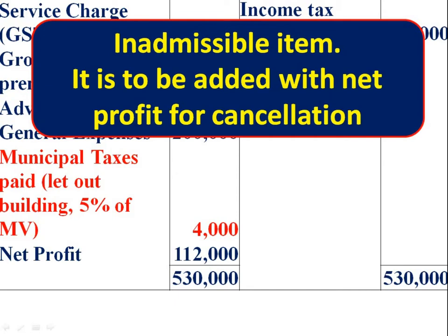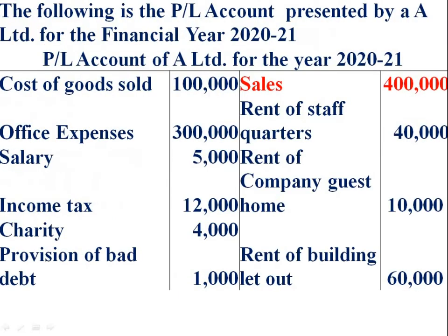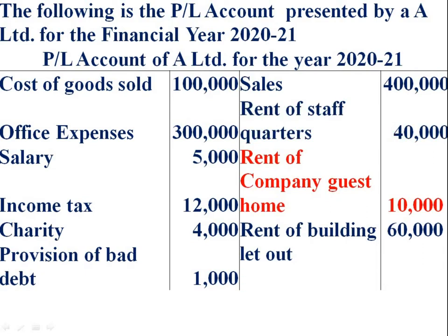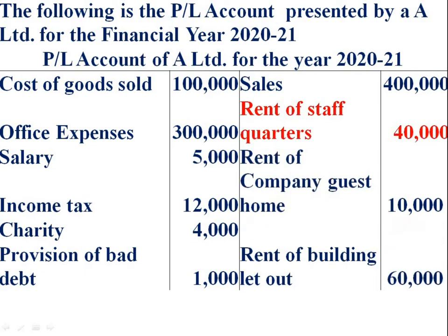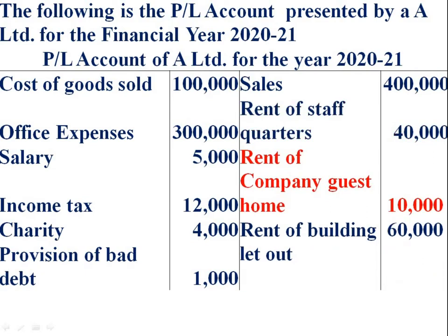We are given net profit Rs. 1,12,000. On the credit side, sales is a business income. Rent of staff cottage and rent of company's guest house — these are business incomes, not income from house property.